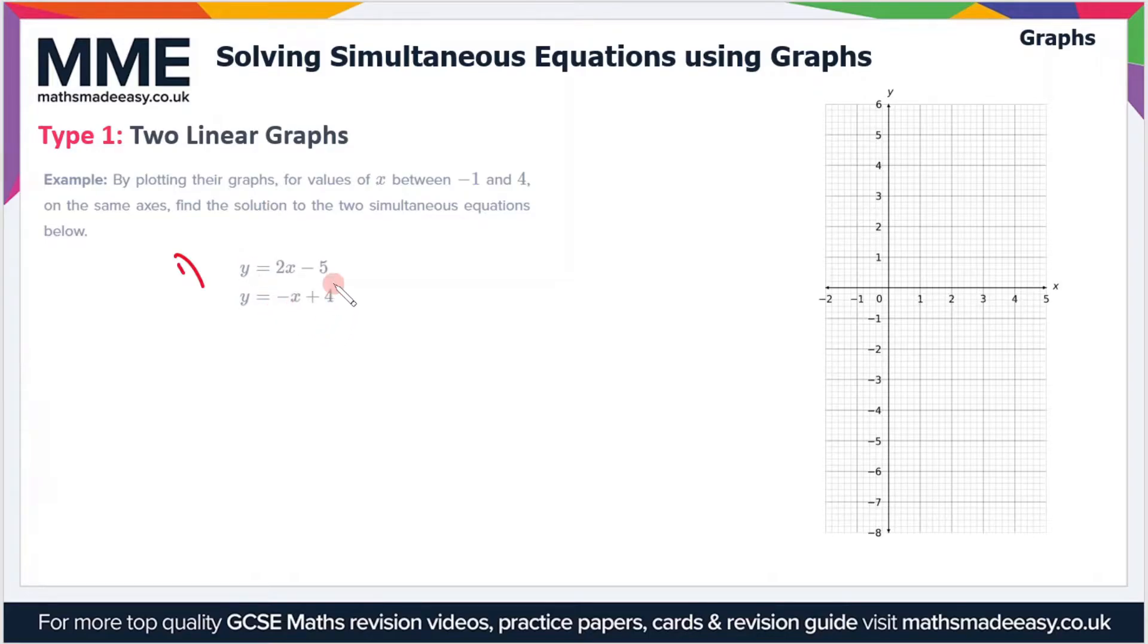So for the first one, y equals 2x minus 5, well that's a gradient of 2 which means it goes up 2 for every one it goes across and it crosses the y axis at minus 5. So if we draw the line it should look something like this.